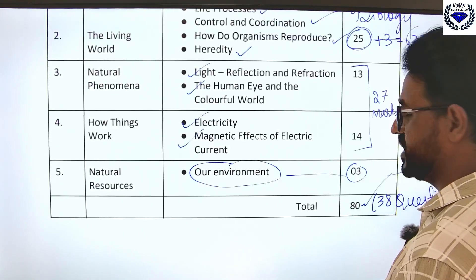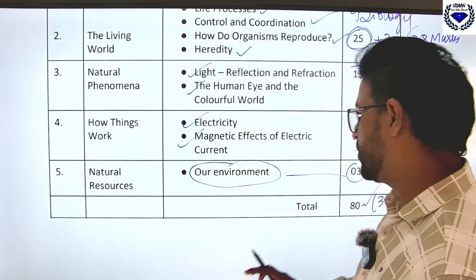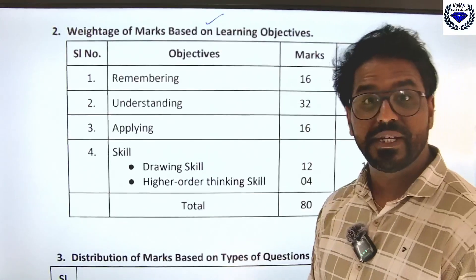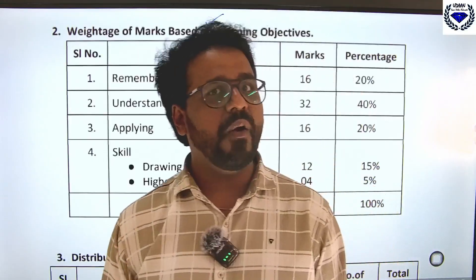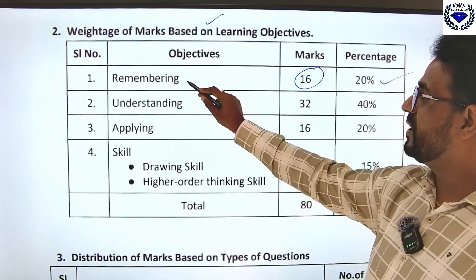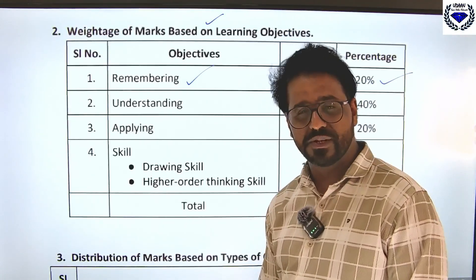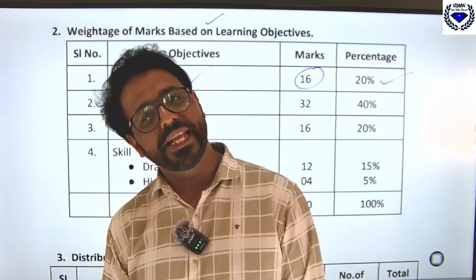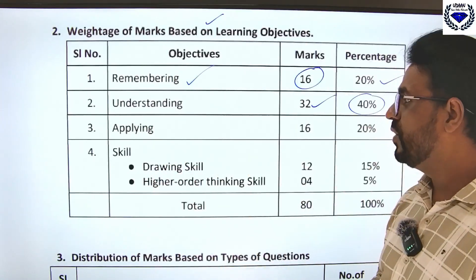You will get 38 questions total in your question paper. Moving on to the weightage of marks based on learning objectives — according to the latest syllabus, if you just memorize by heart you can expect 16 marks; only 20% has been given to remembering. If you understand the concept and can apply it — activities-based and tricky questions will be asked — that accounts for around 40 marks.